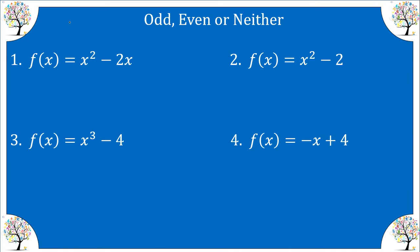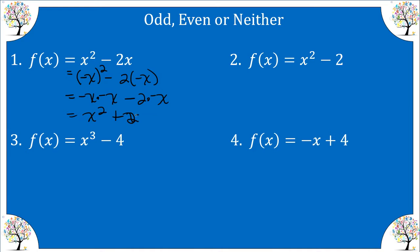Now let's look at odd, even, and neither. When you plug in negative x, if you get the same outcome it is even. If you get the opposite outcome, it is odd. If neither occurs, it is neither. To test, plug in negative x everywhere you see an x and expand. If one term matches the original and another doesn't — neither the exact same nor the total opposite on all terms — then the function is neither.